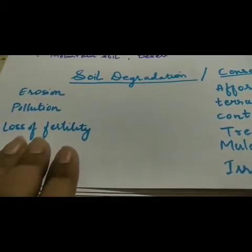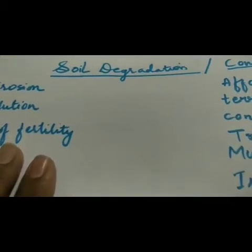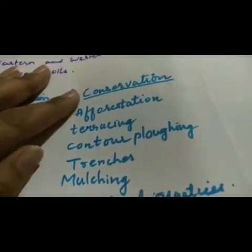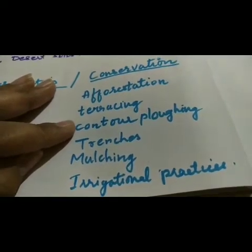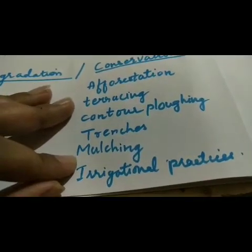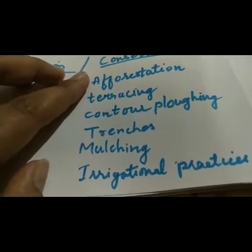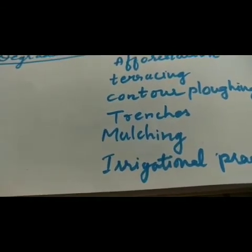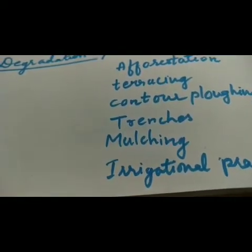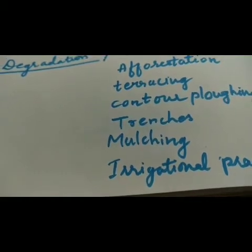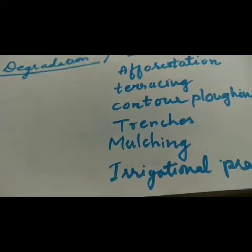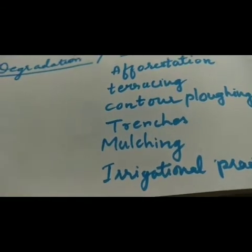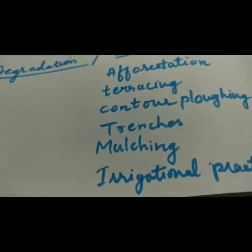As soil degradation occurs, we should adopt the best techniques to maintain and improve soil quality. The conservation techniques are: afforestation, terracing, contour ploughing, trenches, mulching, and irrigation practices. Afforestation — planting large areas with trees — is very effective in checking soil erosion. Terrace farming and contour ploughing should be done to check erosion in hilly regions. Embankments of soil and rocks may be built along contours to check the flow of rainwater. Sometimes, trenches are dug behind the barriers to allow water to collect and seep into the soil, which increases the level of underground water.